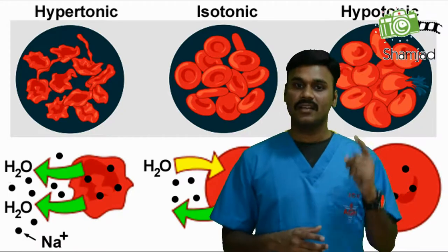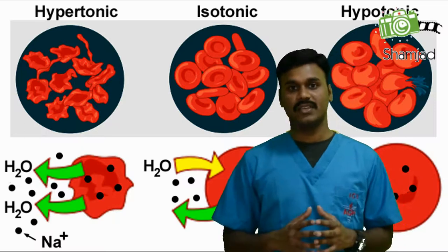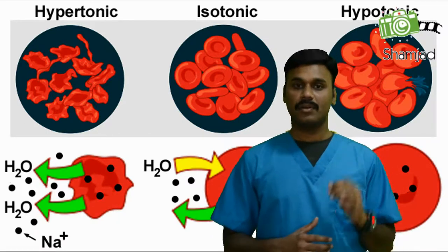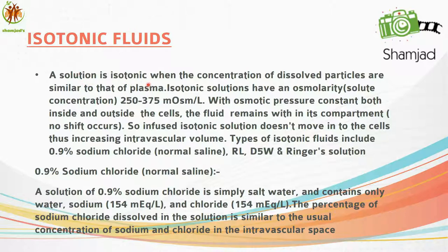Crystalloid solutions are distinguished by their relative tonicity in relation to plasma. Tonicity means the concentration of dissolved molecules. It is divided into three groups: isotonic, hypertonic, and hypotonic. Isotonic fluids have a concentration of dissolved particles similar to that of plasma, with an osmolarity of 250 to 375 milliosmoles per litre. With osmotic pressure constant both inside and outside the cells, no fluid shift occurs. Types include normal saline (0.9% sodium chloride), Ringer's lactate, D5 water, and Ringer's solution.